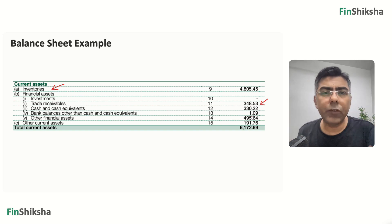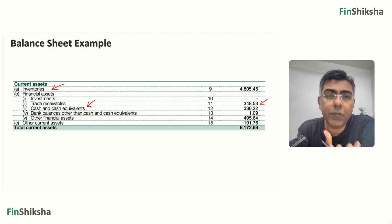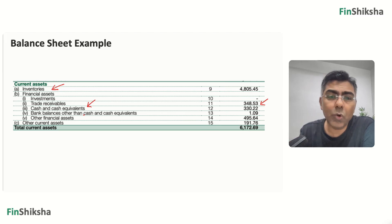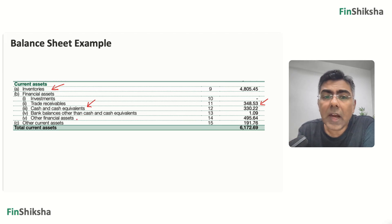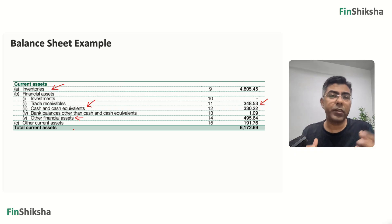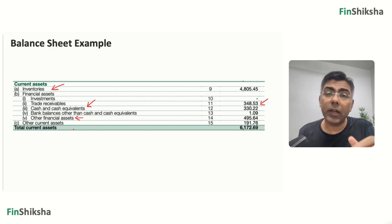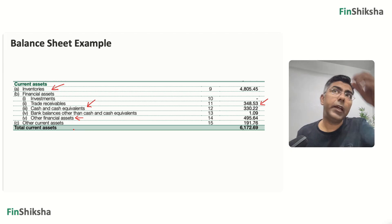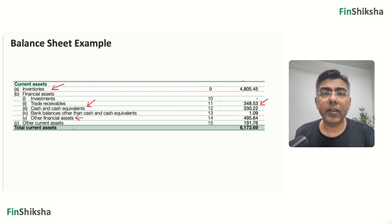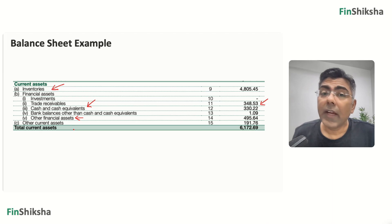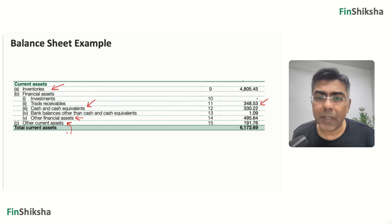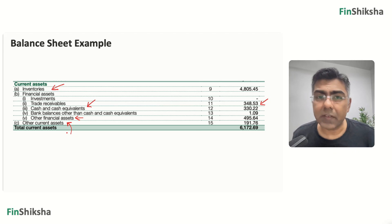With 50,000 crore in sales, DMART has around 300 crore of receivables. Cash and cash equivalents is basically money available directly for use as cash, while bank balances other than this are denoted separately. Other financial assets could be short-term rental deposits or loans given to employees. Other current assets are advances given to suppliers — those get classified here.